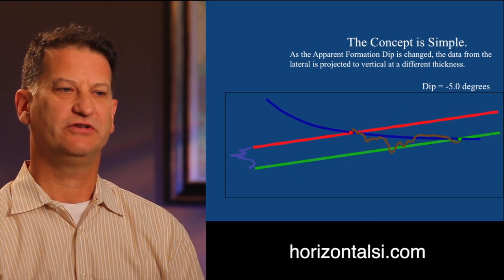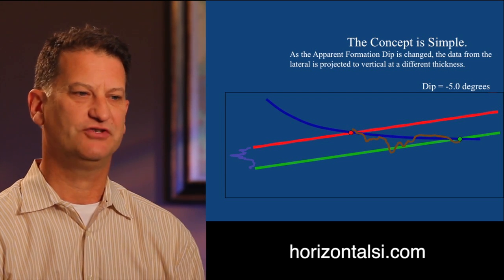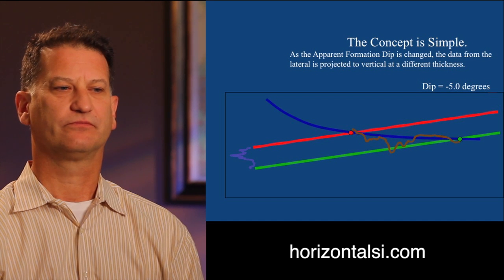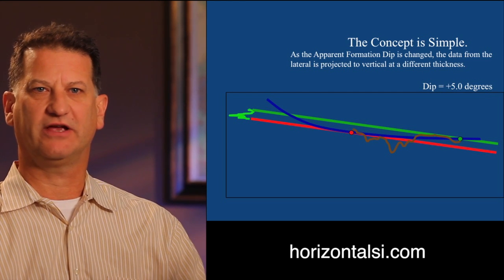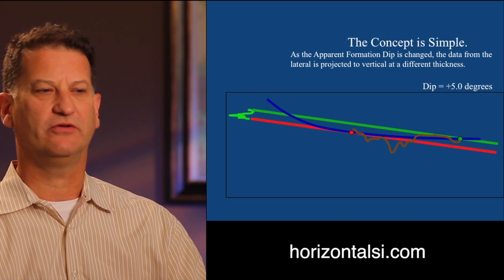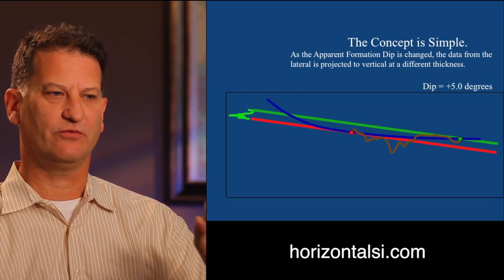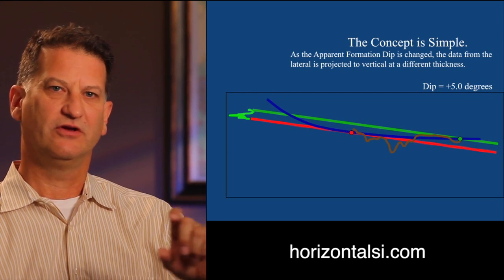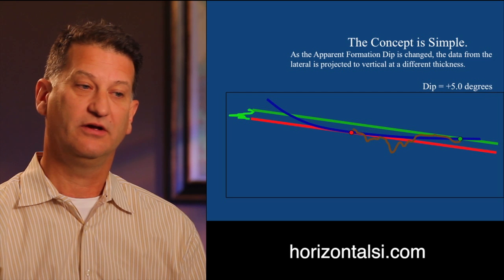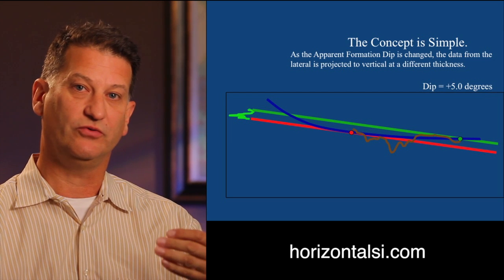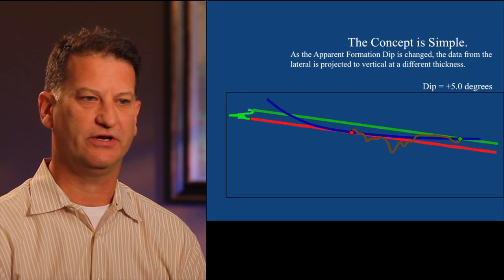As the formation dip rate is changed, you can see that the thickness of that data changes. As the well turns back up section, you can see that the signature of that gamma ray actually flips around. What we then do is take that signature that represents that vertical thickness, correlate it to other vertical wells in the area, and we're able to tell from that thickness what the apparent formation dip rate is.